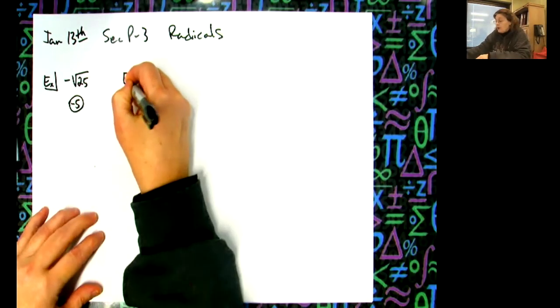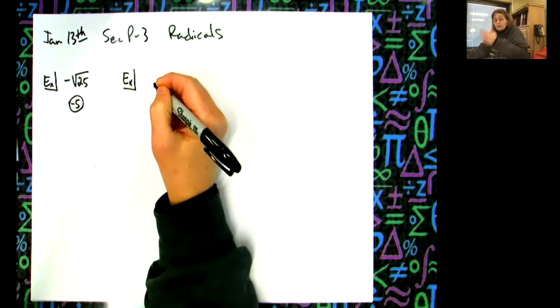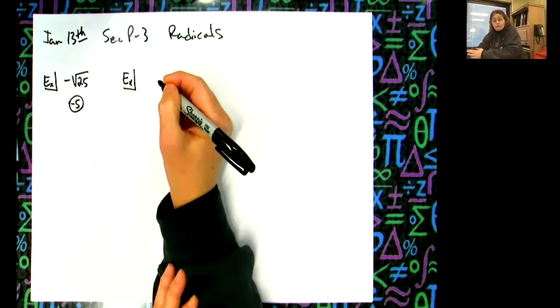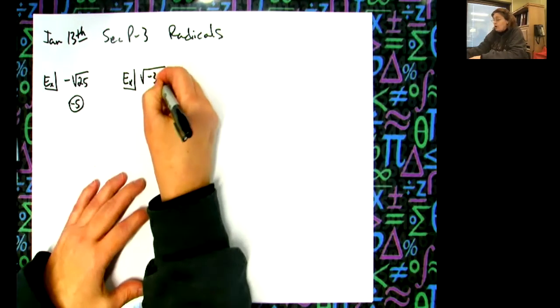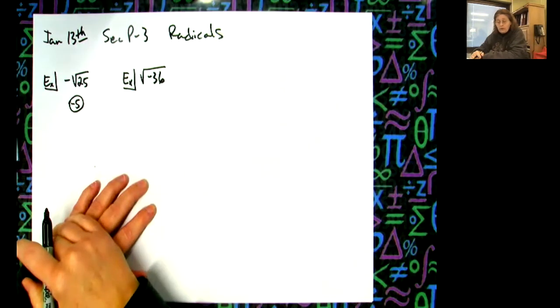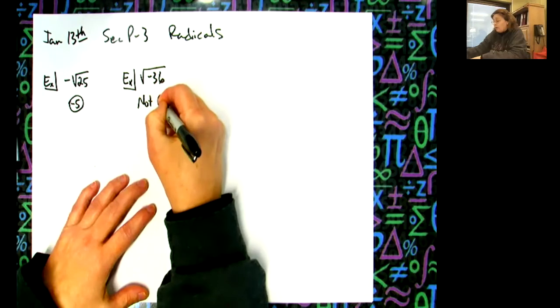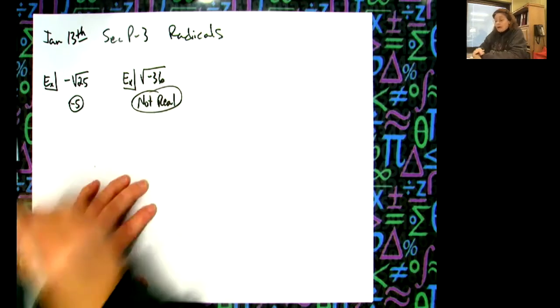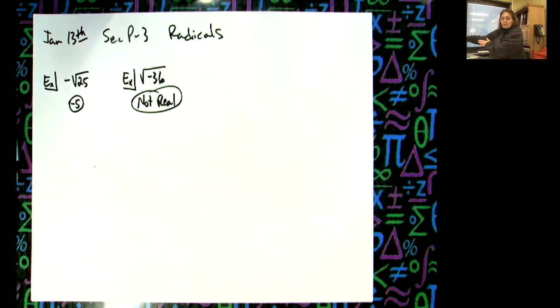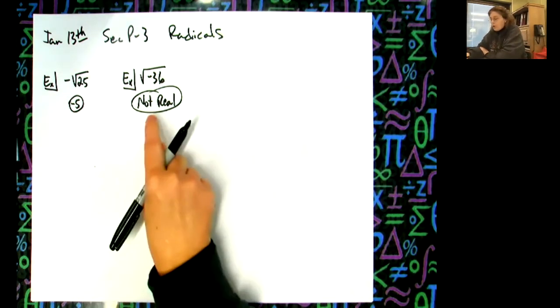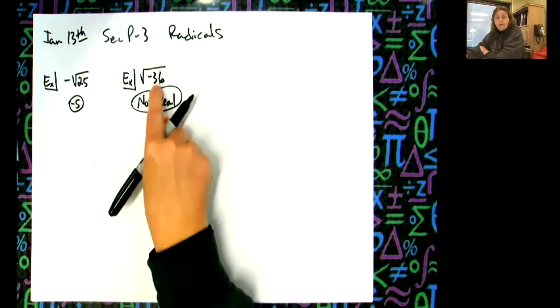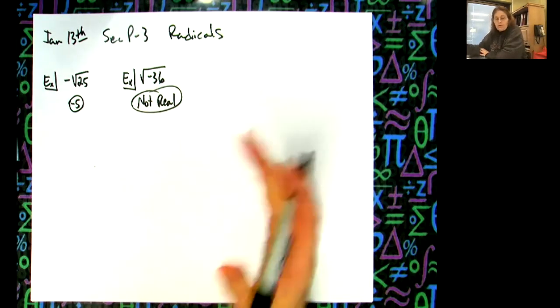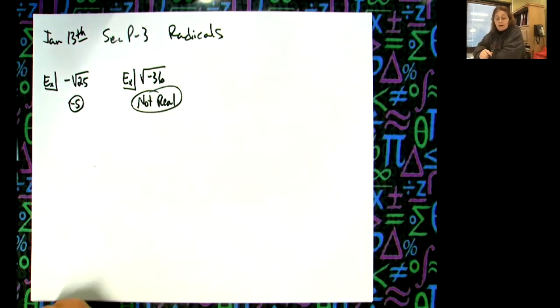Now right now at this point in this textbook, we have not been introduced to imaginary numbers yet, so they are going to assume that you don't know what an imaginary number is. So if they give you something like the square root of negative 36, you're just going to say that it's not real right now. Because we're only in section P3 of the book, imaginary numbers come later. It would be 6i though. We do know that the answer, if I answer it using imaginary numbers, is going to be 6i.